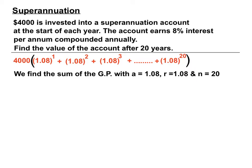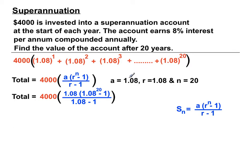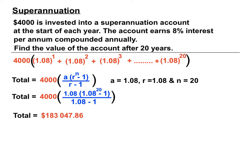Using the sum to N terms formula for a GP: S_n = a(r^n − 1) / (r − 1), we substitute a = 1.08, r = 1.08, and n = 20. The 4,000 is carried through from the factorisation. Carefully substituting and evaluating on the calculator, we get a total value of $183,047.86.